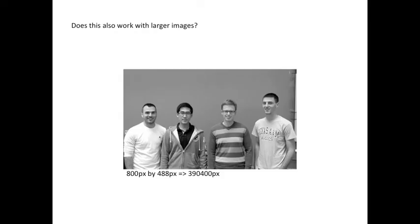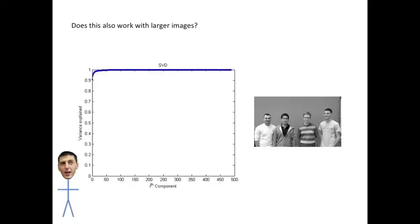Here's a more complicated example. This image is 800 by 488 pixels for a total of 390,400 pixels. You'll notice that the amount of information captured for this image increases quickly with the number of singular values used to approximate it. By the time we get to 50 singular values, there should be very little change from the original image.